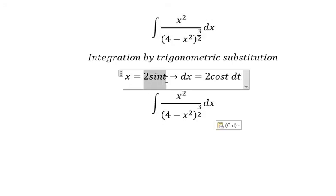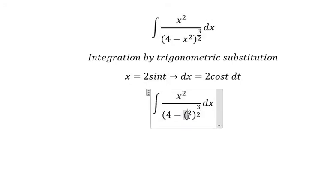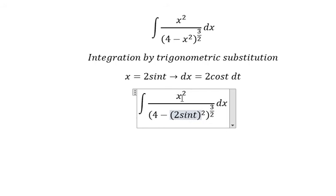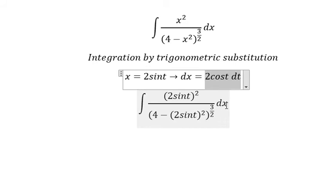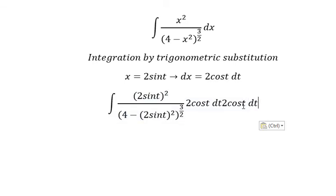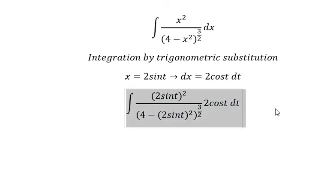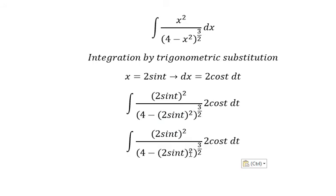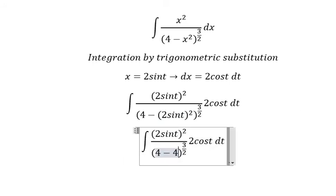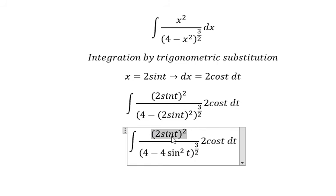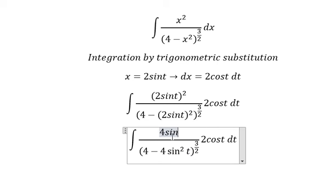So we put these substitutions into the equation. We change x squared to (2 sine t) squared, which is 4 sine squared t, and we change dx to 2 cosine t dt.